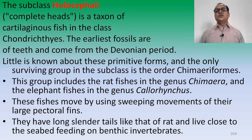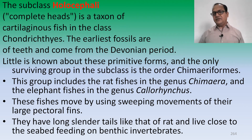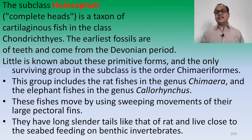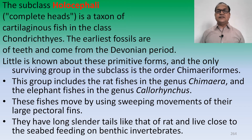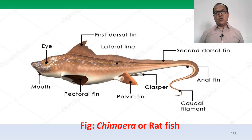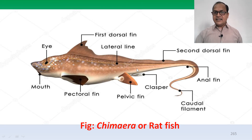This group includes the ratfish or chimera and the elephantfish Callorhinchus. These species move using sweeping movements of their large pectoral fins. They have a long, slender, rat-like tapering tail, and live close to the seafloor feeding on benthic invertebrates. This is the chimera or ratfish, also called rabbitfish, which has the characteristic rat-like tail.